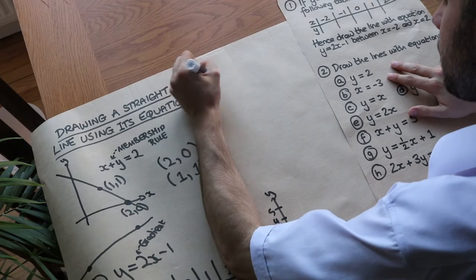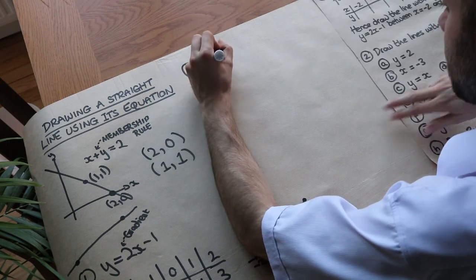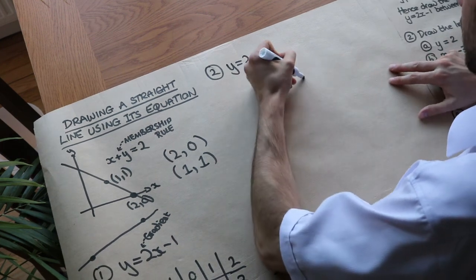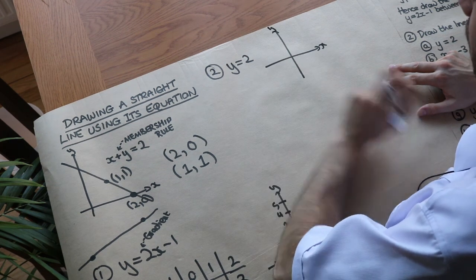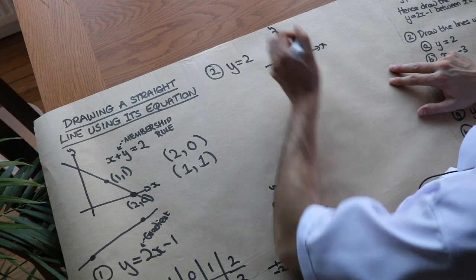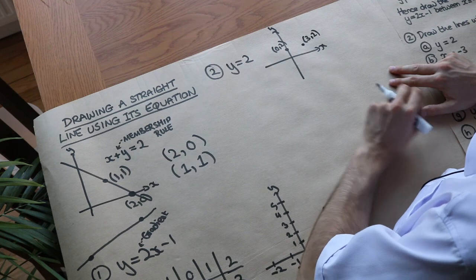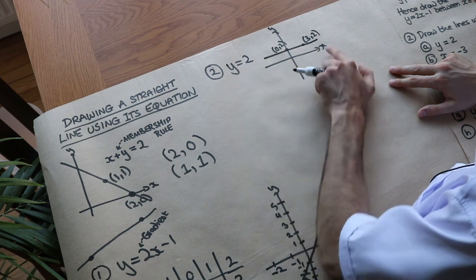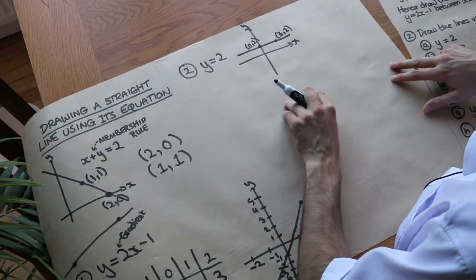Now let's draw some other lines. First, y equals 2. This is a membership rule which says whatever the point is, the y value always has to equal 2. If I pick (0, 2) — the y value is 2, so it obeys the rule. I could also pick (3, 2). Now we've got 2 points, so we can draw it: it's a horizontal line that cuts the y-axis at 2.